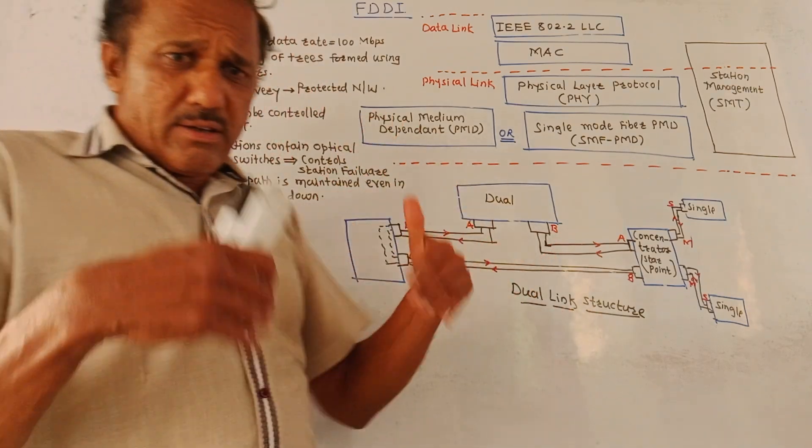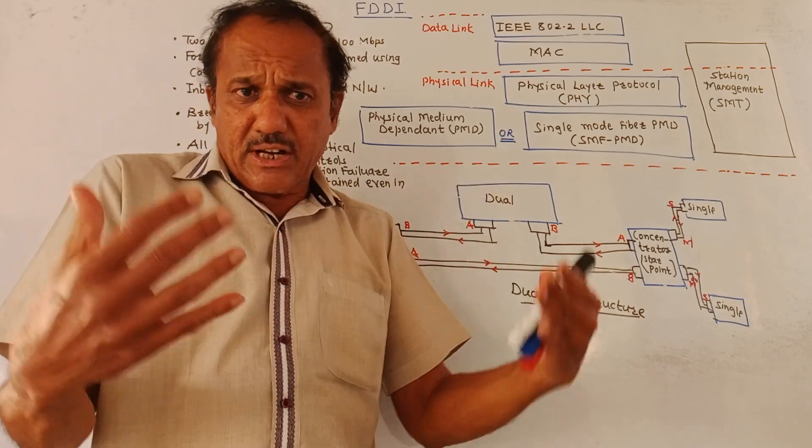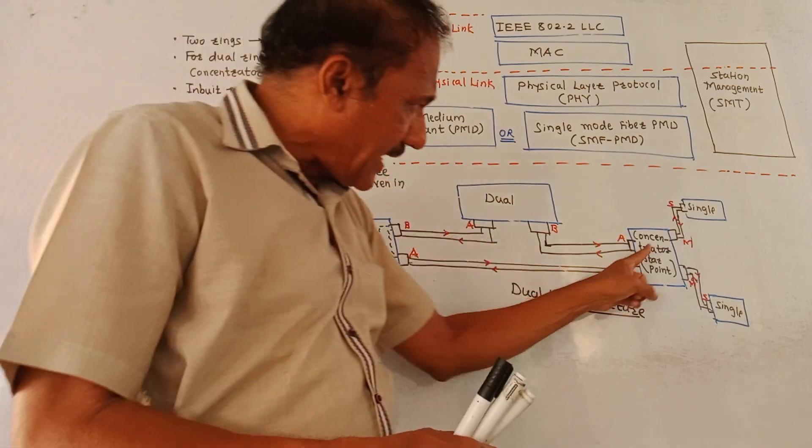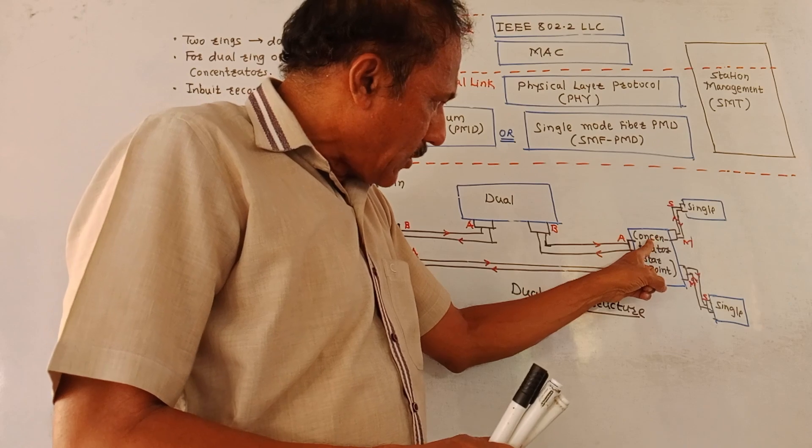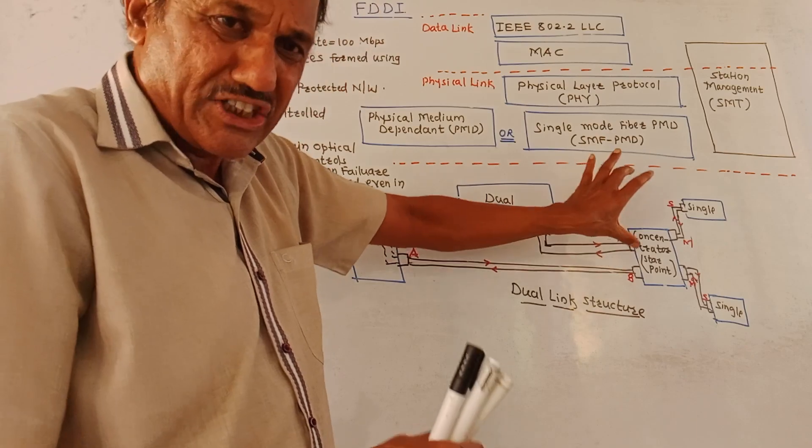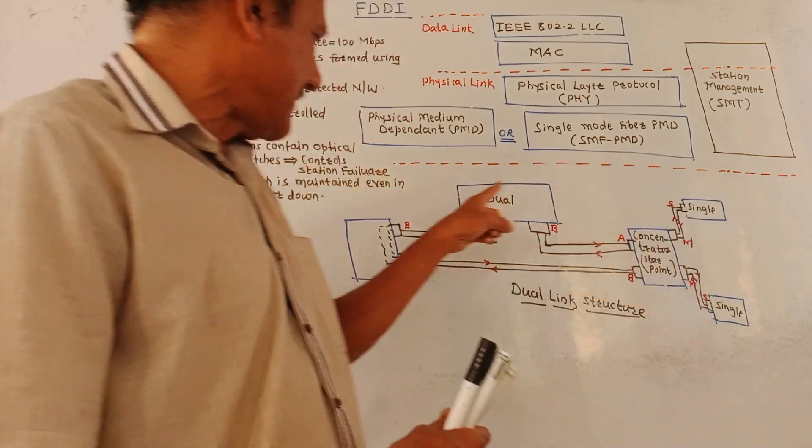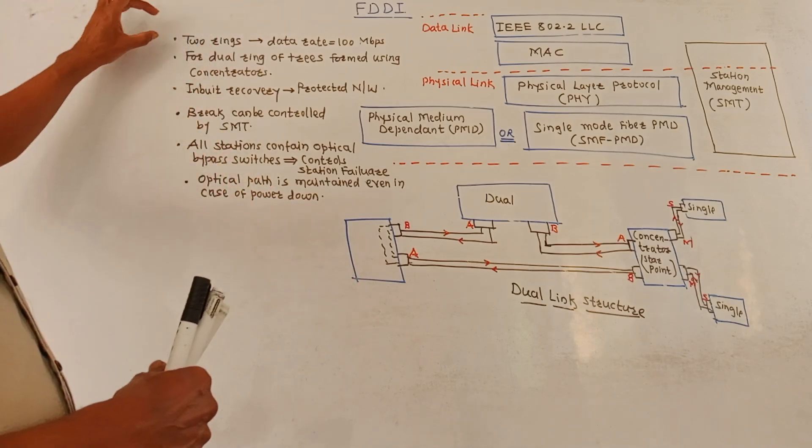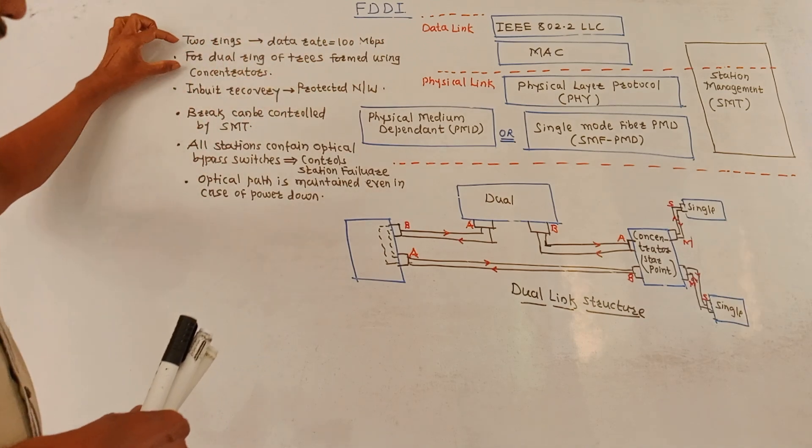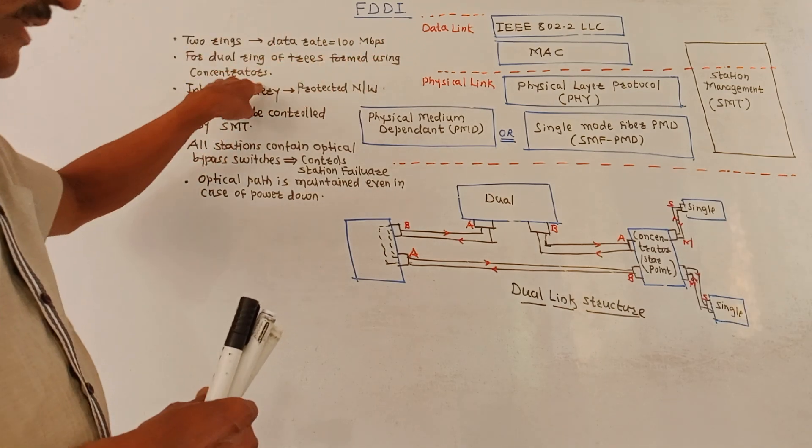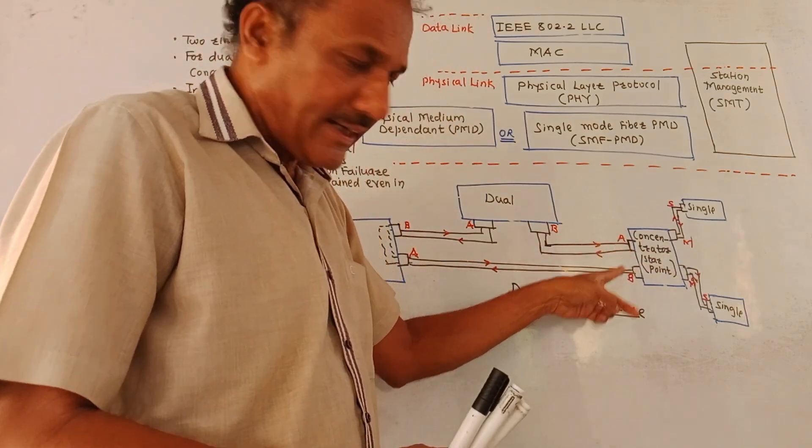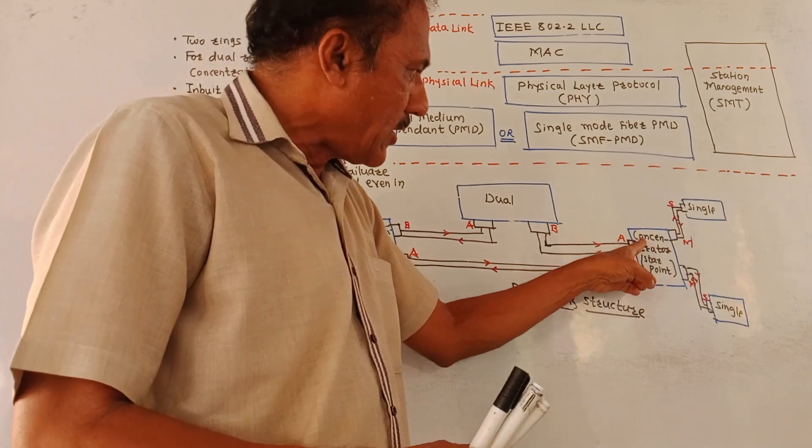In many cases, whenever there is large traffic, then in that case both the rings, primary as well as secondary, are used. So, two rings are used. These two rings are connected to the device which is called concentrators or star points. Using star points, the two ring structure is formed. These are single points, this is the dual point and so on. The data rate can be achieved up to 100 Mbps. For dual ring of trees are formed using concentrators or data points. This is the dual ring structure, first ring and second ring which is formed by using the star points or concentrators.